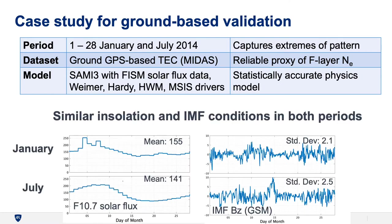The two months have very similar insolation and IMF conditions. The F10.7 index of solar flux is around 155 in January and around 141 in July. The IMF Bz has a similar standard deviation: 2.1 in January and 2.5 in July. So these two months are a good comparison period.